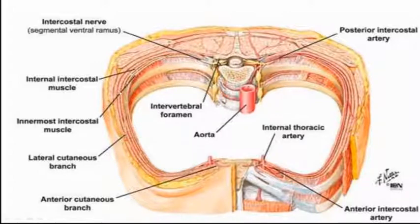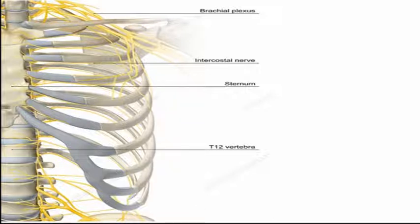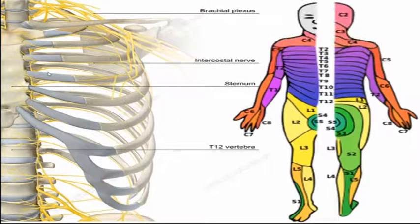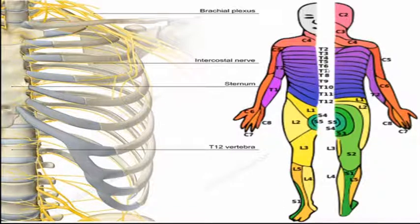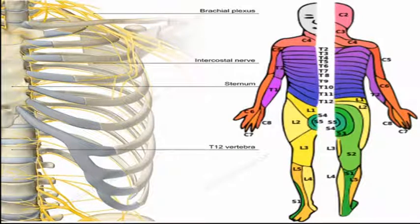These are the intercostal spaces, with nerves coming forward as anterior branches and dorsal branches supplying these muscles. The skin area supplied by the thoracic nerves can be seen clearly — T2 and T1 supply their respective areas. T3 to T6, the typical nerves, supply only the thoracic region, while T7, T8, T9, T11, and T12, the atypical nerves, supply both the thoracic cavity and the abdominal wall.